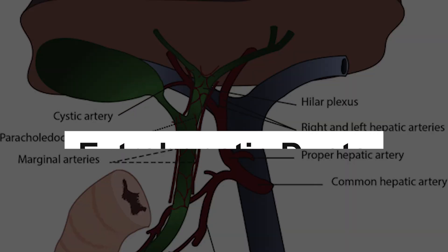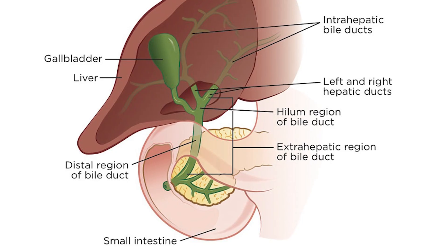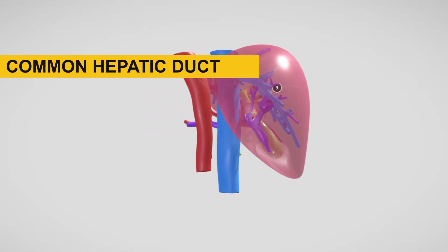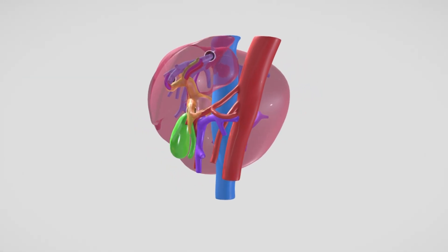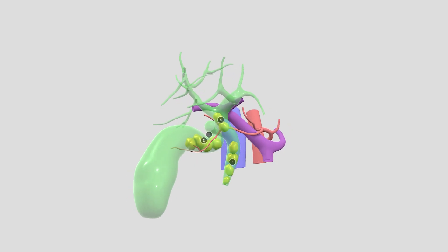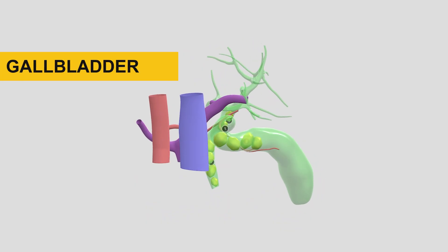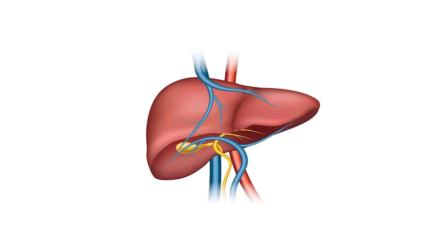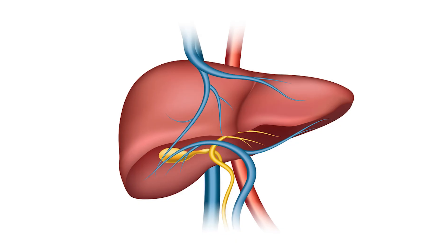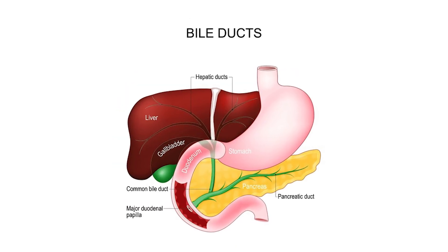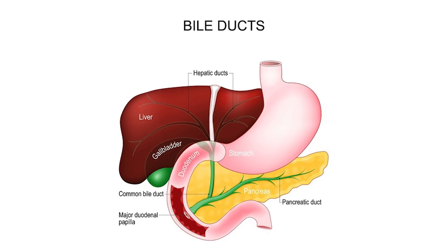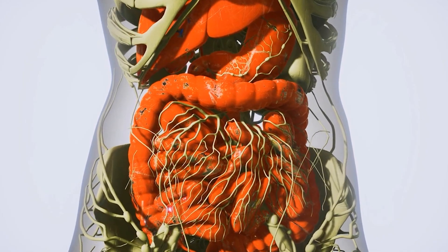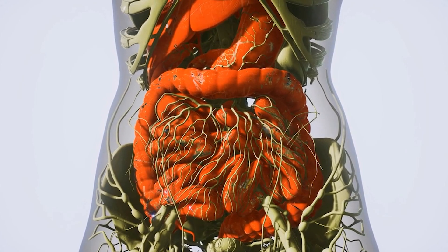Extrahepatic ducts. After exiting the liver, bile flows into the extrahepatic ducts, including the left and right hepatic ducts. These ducts merge to form the common hepatic duct, which continues outside the liver. Common bile duct. The common hepatic duct joins with the cystic duct, which comes from the gallbladder, to form the common bile duct. The common bile duct is the final segment of the bile duct system and carries bile from the liver and gallbladder to the small intestine. Just before entering the small intestine, the common bile duct usually joins with the pancreatic duct to form the hepatopancreatic ampulla, also called the ampulla of Vater. This is where bile and pancreatic enzymes are released into the small intestine to aid in digestion.